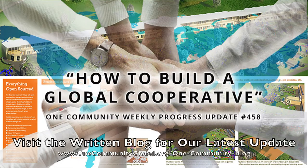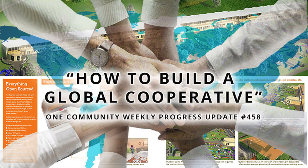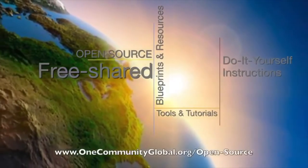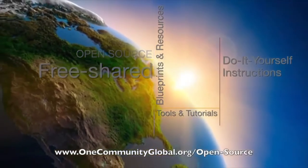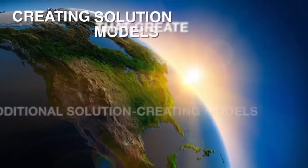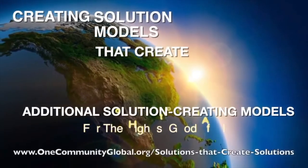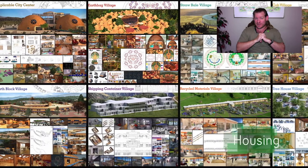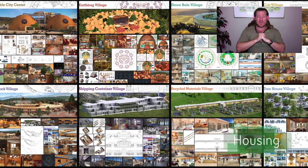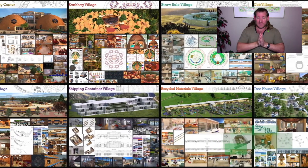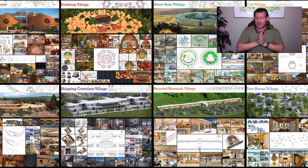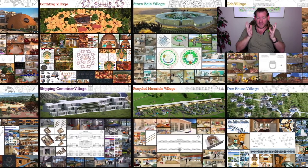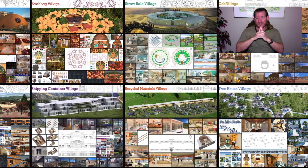How to build a global cooperative. One Community Weekly Progress Update, number 458. One Community is a 501c3 nonprofit organization. We are creating open source and free shared blueprints and resources, tools and tutorials, and do-it-yourself instructions for highest good living — creating solution models that create additional solution creating models in the service of all life on this planet. My name is Jay Sabel, and I'm the Executive Director of the One Community 501c3 nonprofit organization. This is our January 2nd, 2021 edition of our Weekly Progress Update.